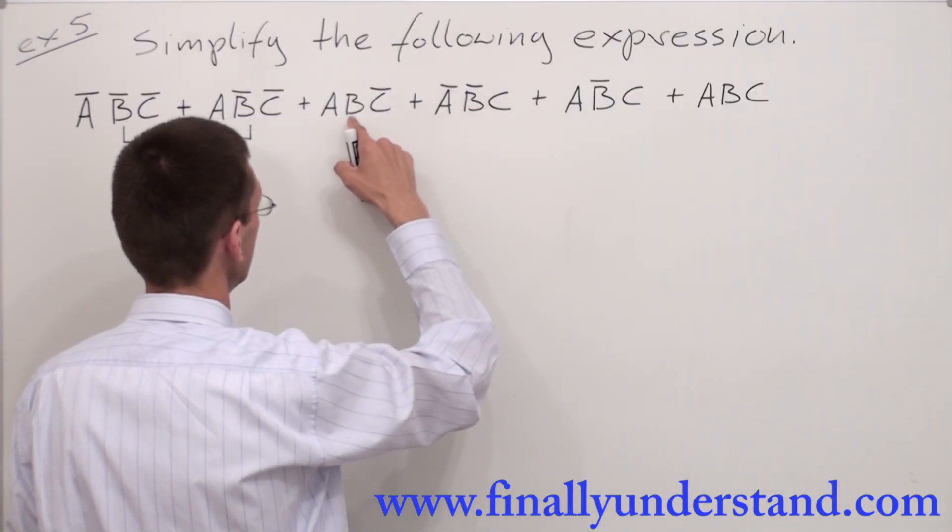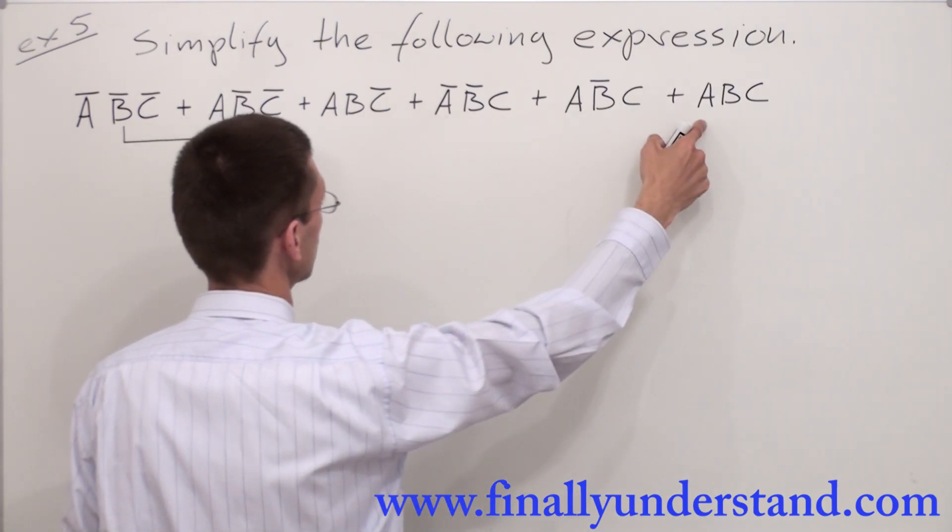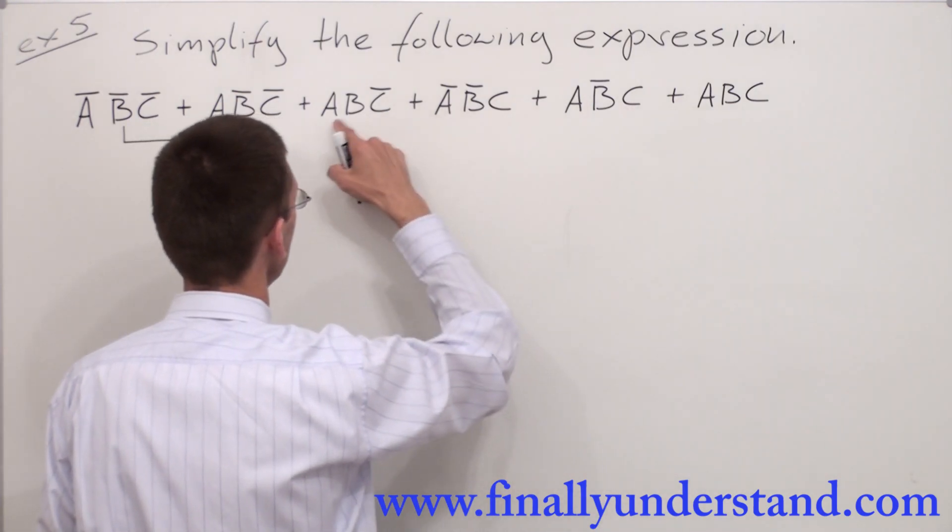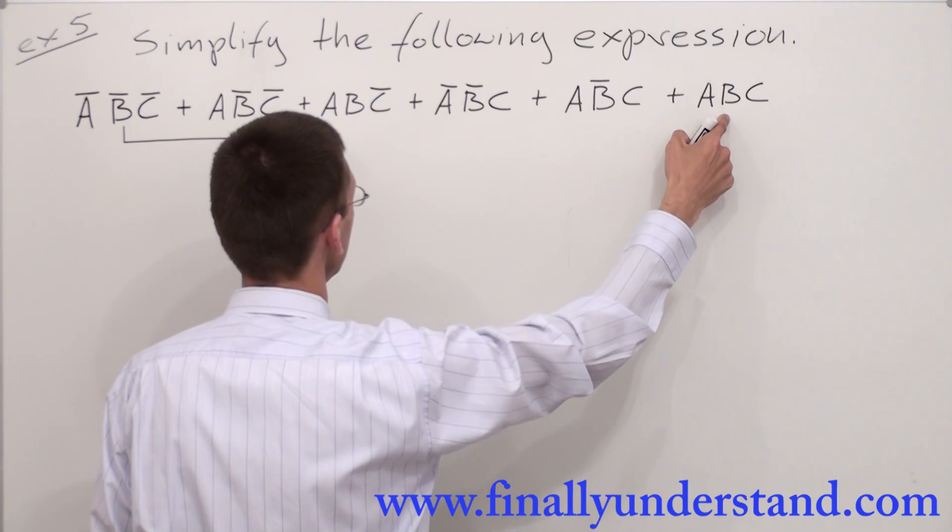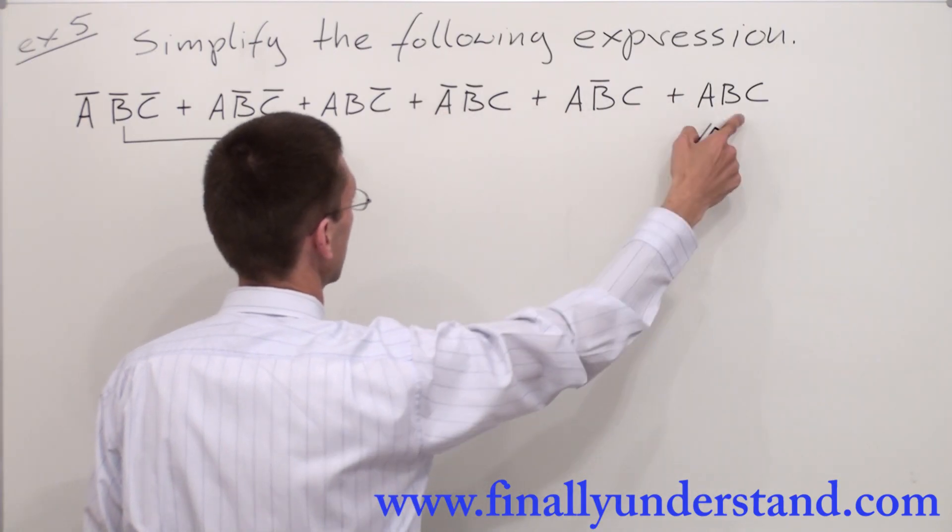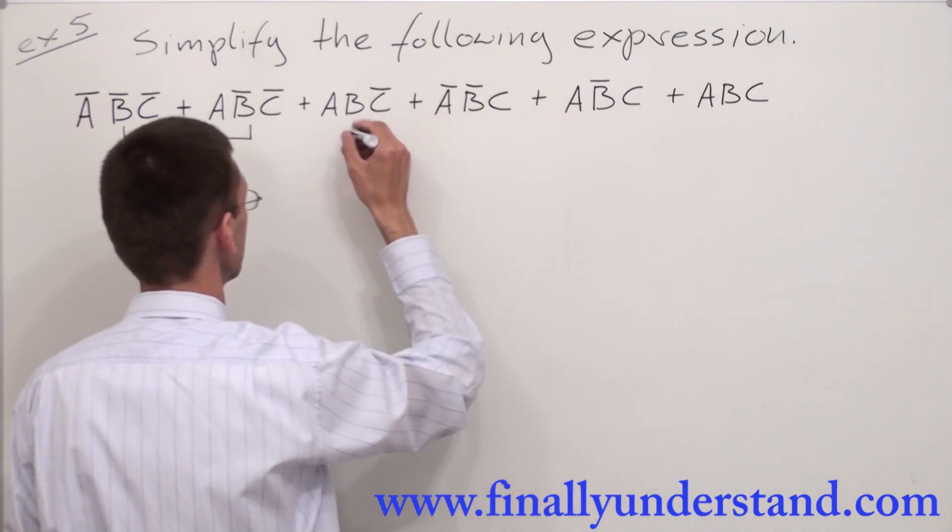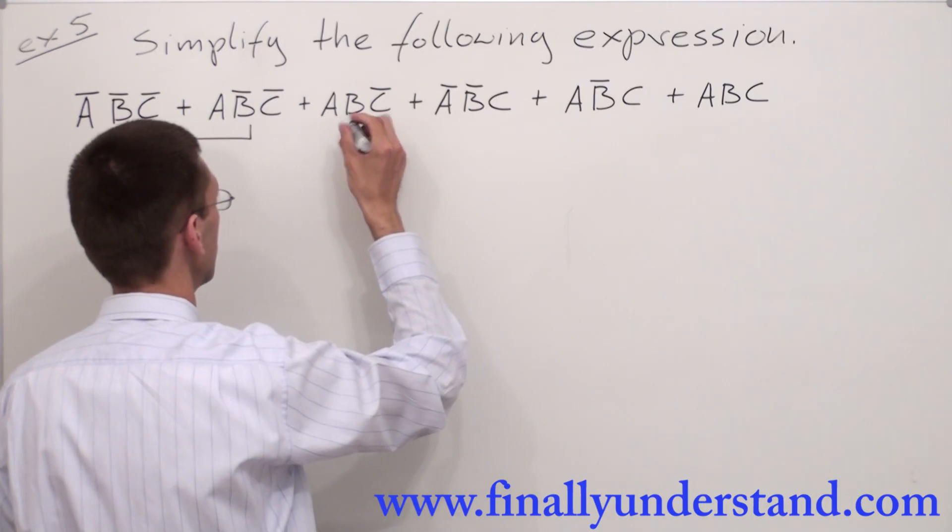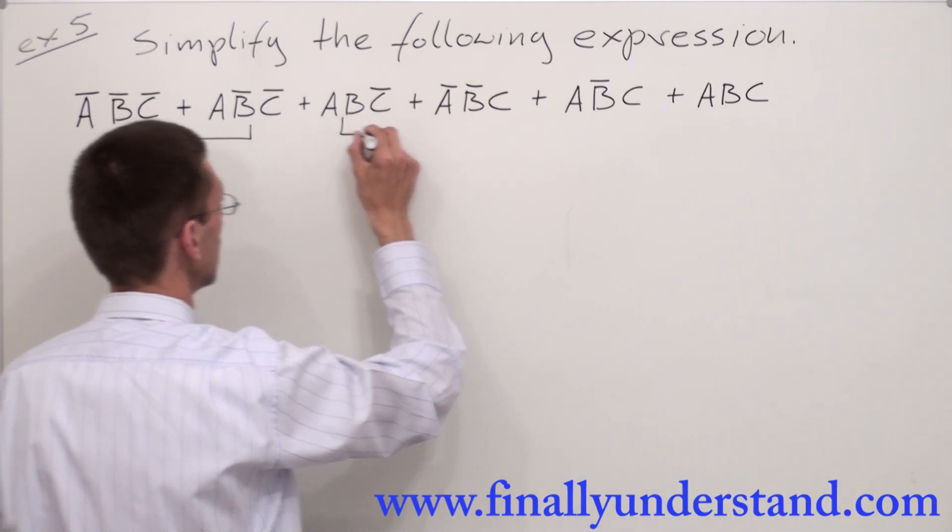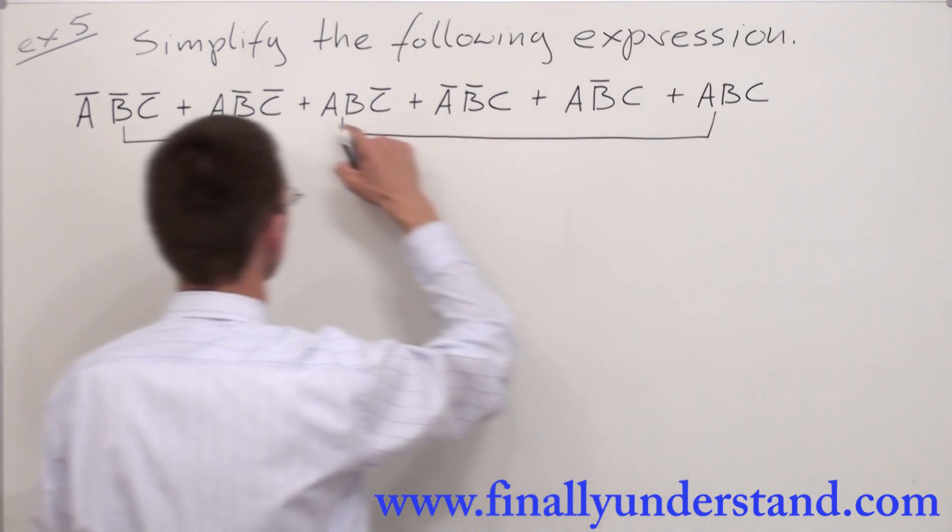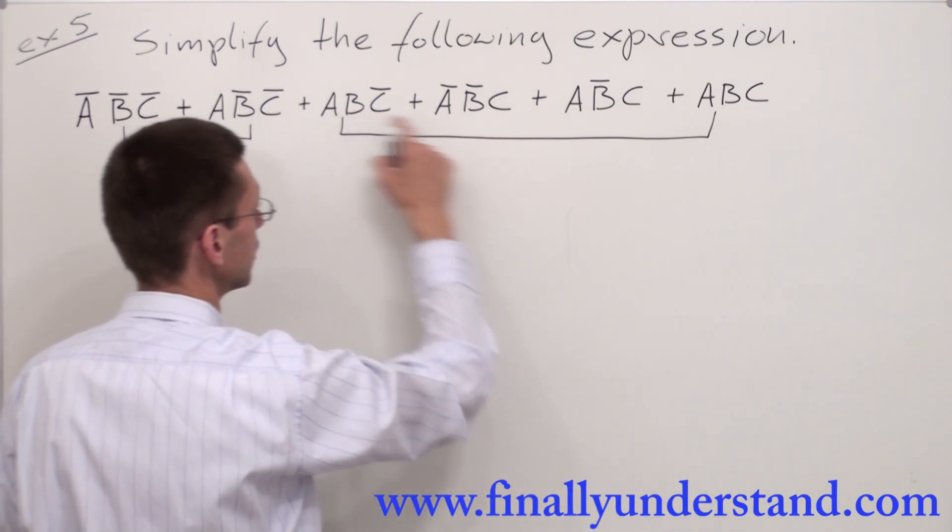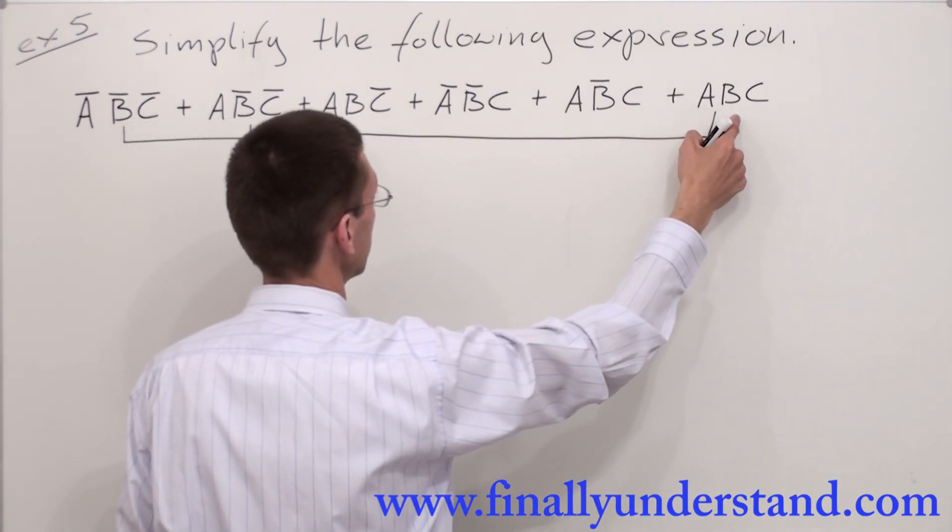Let's take a look at this term and the very last one. We have AB and we have AB. The C's are different, so this is the best option because we can factorize from these two terms two variables, which are A and B. A and B are identical.